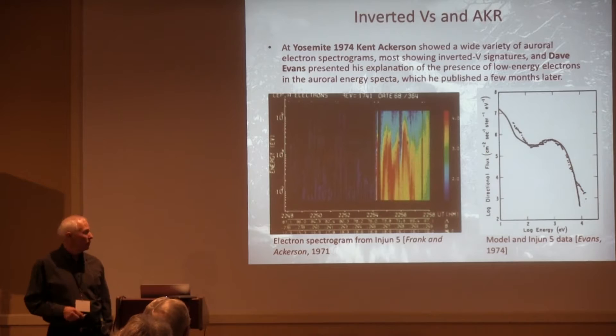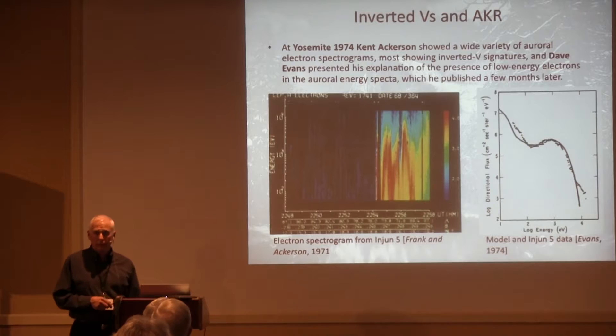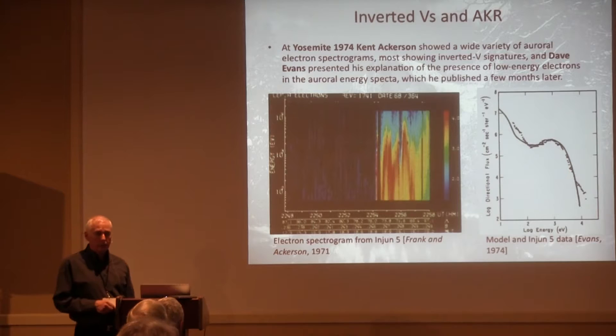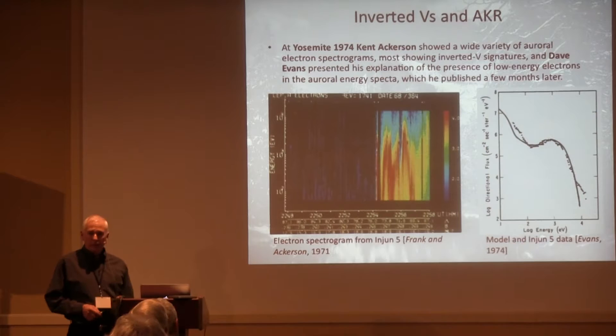I can remember distinctly at Yosemite '74, Kent Akerson showing — it seemed like about 50 of these things. One of them looked different, but the common denominator was this inverted-V. We all knew from Carl McIlwain several years before, from a sounding rocket, that he had talked about this mono-energetic beam. So we all thought, parallel electric fields — that's what's causing this. But there were deniers, just like climate change and everything. Always deniers.